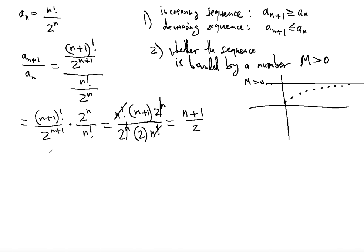(n+1)/2 is greater than 1 for n greater than or equal to 2. When n equals 1, we get (1+1)/2 = 1. When n equals 2 or greater, we get 3/2 or more, which is greater than 1.